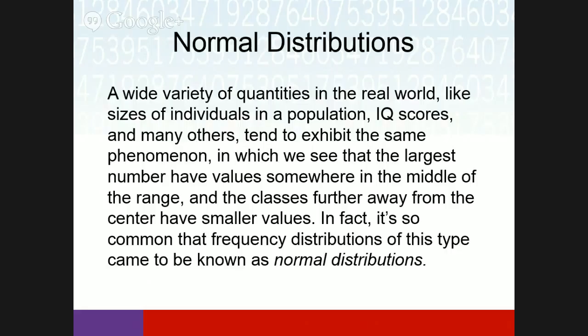Normal distributions describe a wide variety of real-world quantities — like the size of individuals in a population, IQ scores, and many others — where the largest number of values falls somewhere in the middle of the range and values further from the center are smaller. It's so common that this type of frequency distribution is known as a normal distribution. If you took the height of every person in the world, you'd expect the average and the median to be where the most people fall, with outliers being smaller amounts.